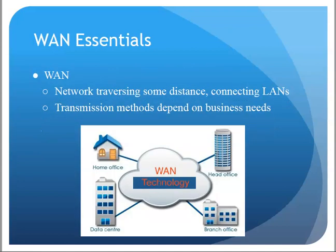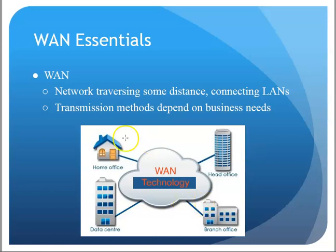Let's take a look at the first section on WAN essentials. A wide area network is a network traversing some distance, usually connecting networks of businesses and LANs. The transmission method really depends on business needs. This generic diagram shows various parts of a company and the WAN technologies connecting them. A cloud is shown because it could be a variety of technologies — different ones depending on bandwidth, need, availability, and distance.